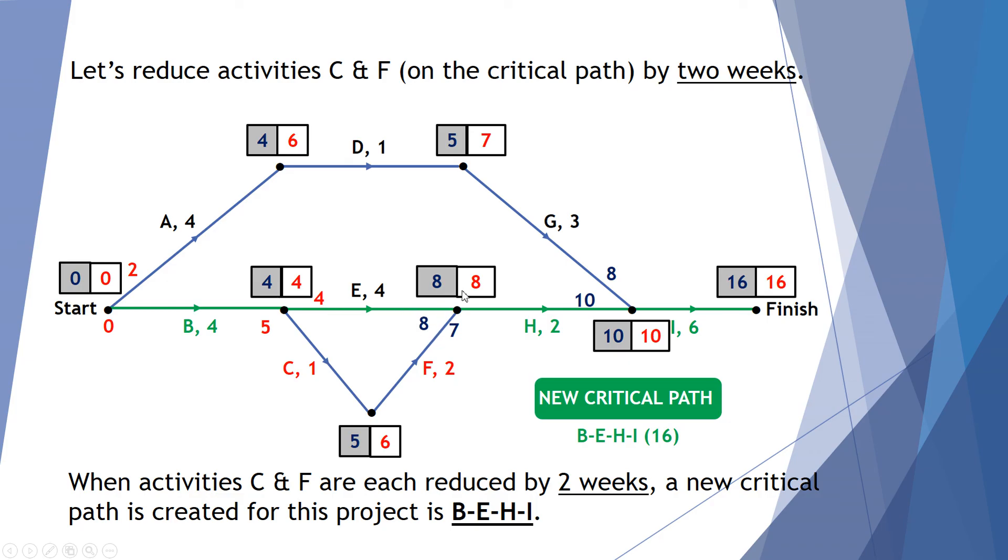So it now becomes part of the critical path. So 8 plus 2 is 10 and 10 plus 6 is 16. And we can do our backward scans as we've done in red. But now, we've reduced the critical path to 16 by cutting back C by 2 weeks and F by 2 weeks. Our new critical path is B, E, H and I.